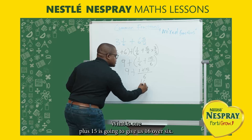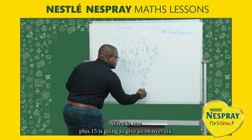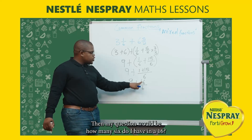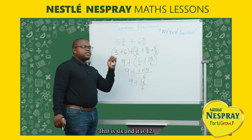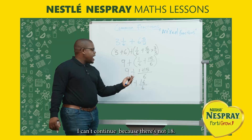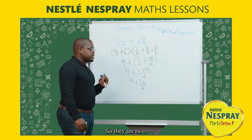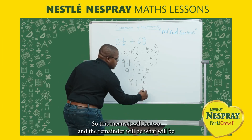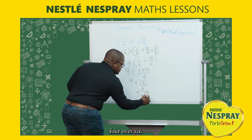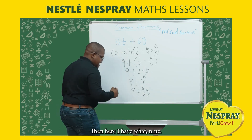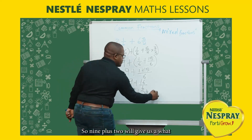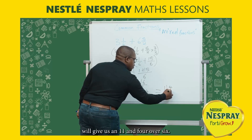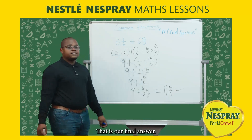We bring down the whole number and add the numerators: 1 plus 15 gives us 16/6, plus 9. Now, how many sixes do I have in 16? Six goes into 12, but not 18, so there are two with a remainder of 4. So it's 2 and 4/6, and 9 plus 2 gives us 11. The final answer is 11 and 4/6.